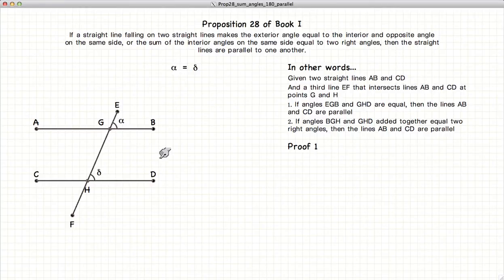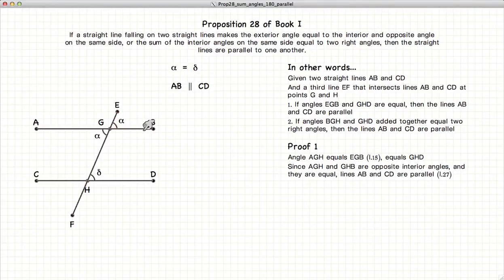So let's begin with the first part of this proposition. We have alpha is equal to delta. Now, according to proposition 15, we know that this angle AGH is going to equal alpha, since it is a vertical angle to EGB. From proposition 27, we've already demonstrated that if the opposite interior angles are equal, then the two lines are parallel.